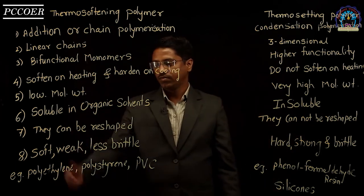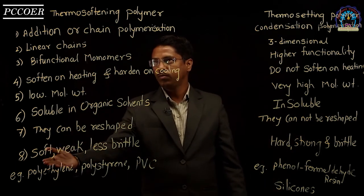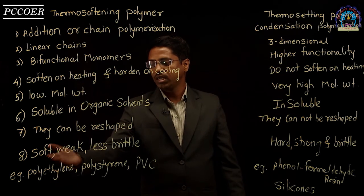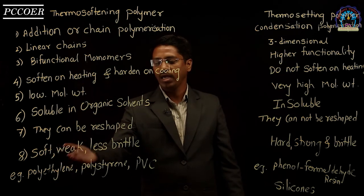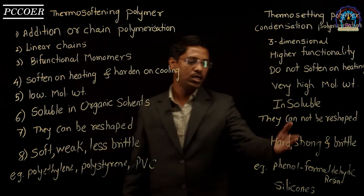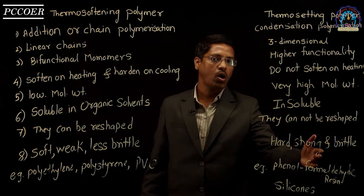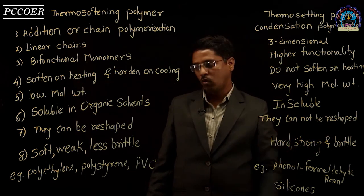The last difference: thermosoftening polymers are generally soft, weak, and less brittle, while thermosetting polymers are hard, strong, and more brittle.